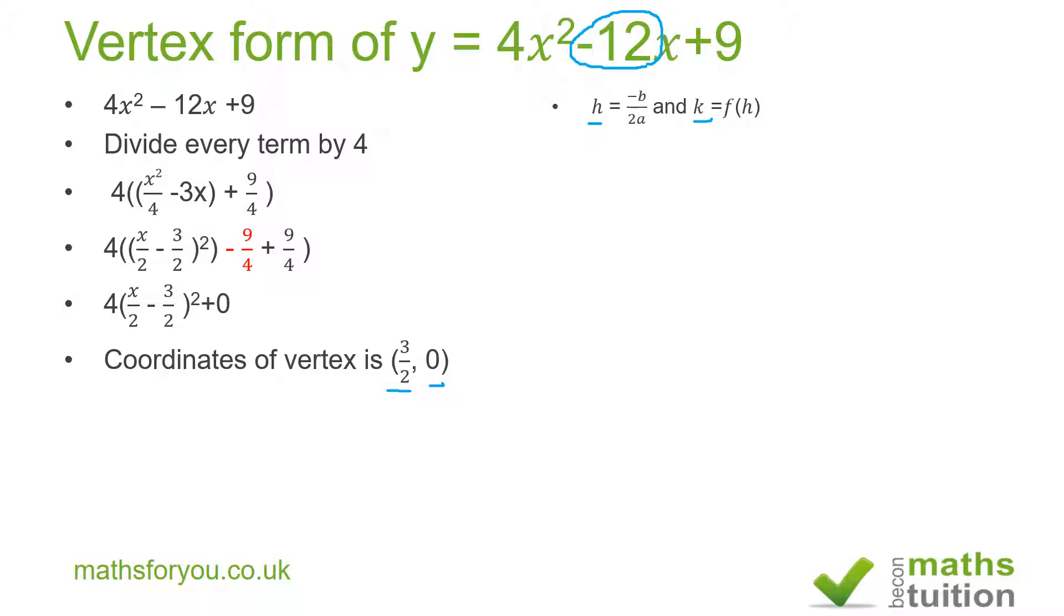And a is the coefficient of x². k will give us the y-coordinate of the vertex. So now we do h = -(-12) / (2 × 4), which gives us that the x-coordinate at the vertex is 3/2.